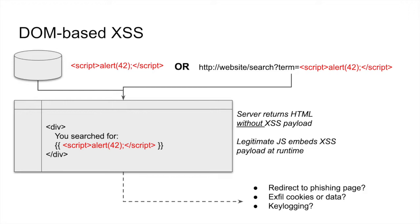That attack payload might exist in the database and be retrieved as a result of an API request the application makes. On the other hand, the attack payload might also be present in something like a URL query parameter, which could be injected into the HTML templating system at runtime by the application. The end result is the same as the prior two kinds of cross-site scripting attacks — the attacker might redirect you to a new page, exfiltrate your data, log your keystrokes, or monitor how you interact with the application.